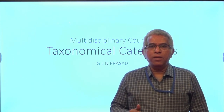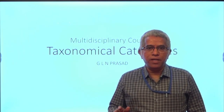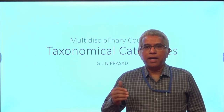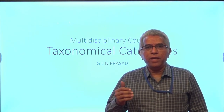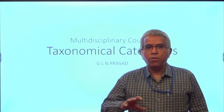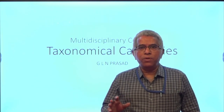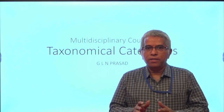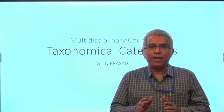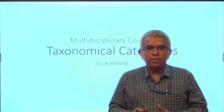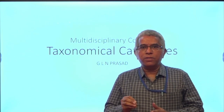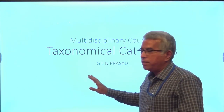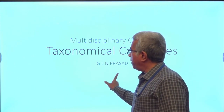Taxonomy is the science of classification. In classification there is a hierarchy — there will be many ranks, many steps, and many units. Each rank in the hierarchy is called a taxon. There are seven obligatory taxa in classification. Let us see what these obligatory taxa are.